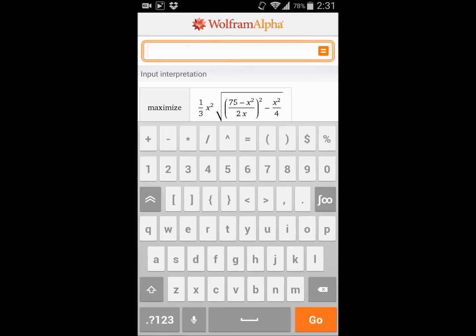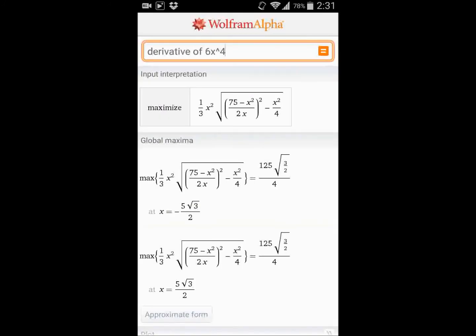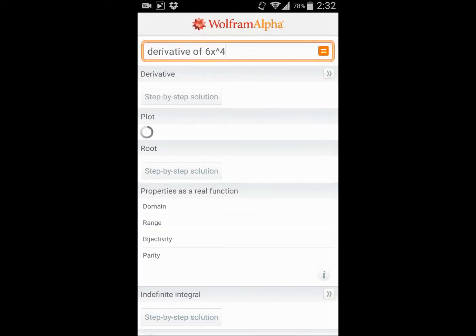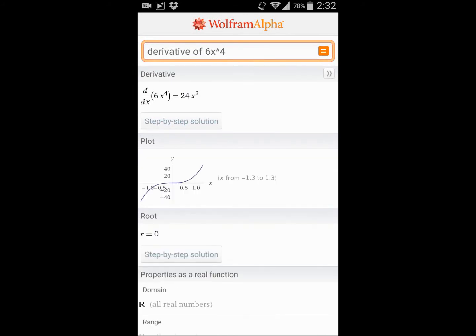What is one mathematical thing you can do? Derivatives. So let's take the derivative of 6x to the fourth, and it takes like one second and it'll give you 24x cubed. It's pretty awesome.